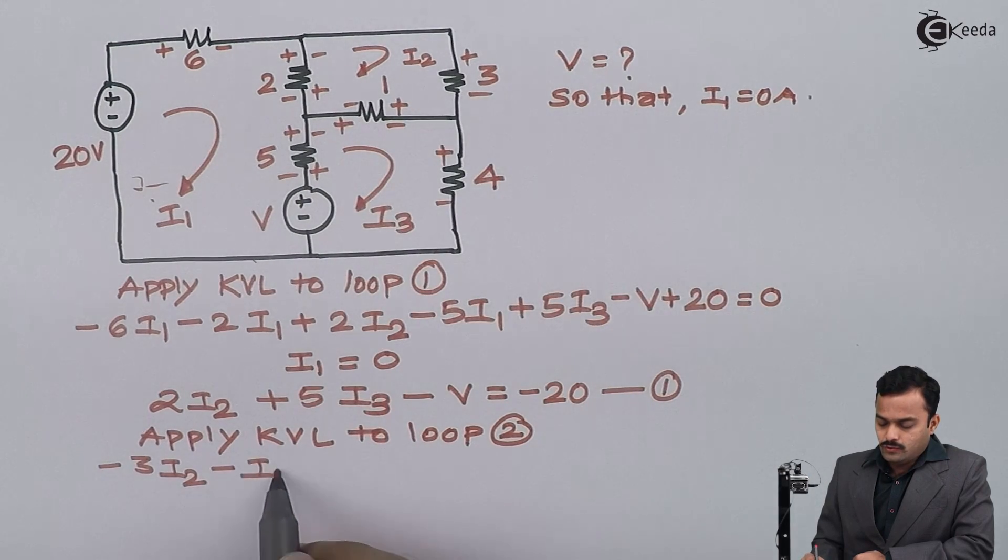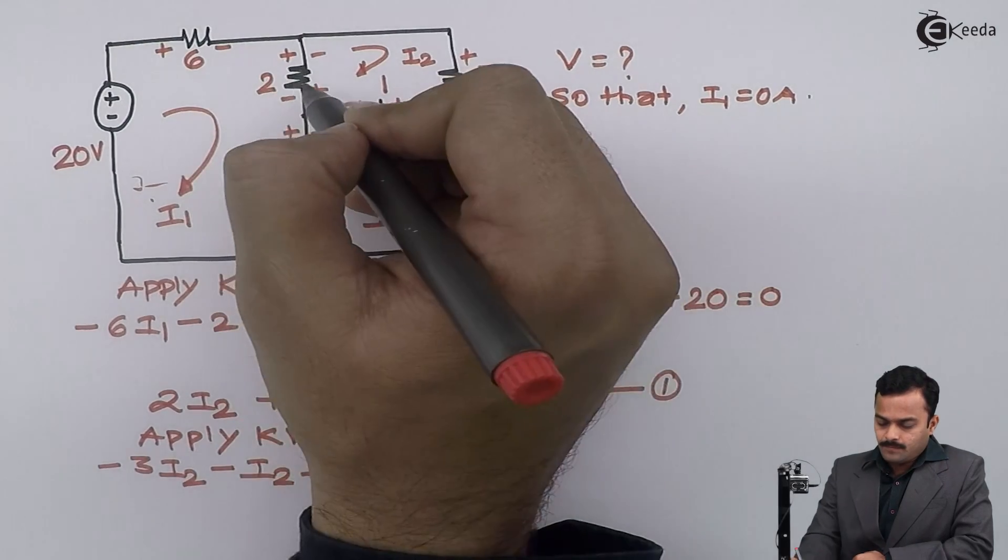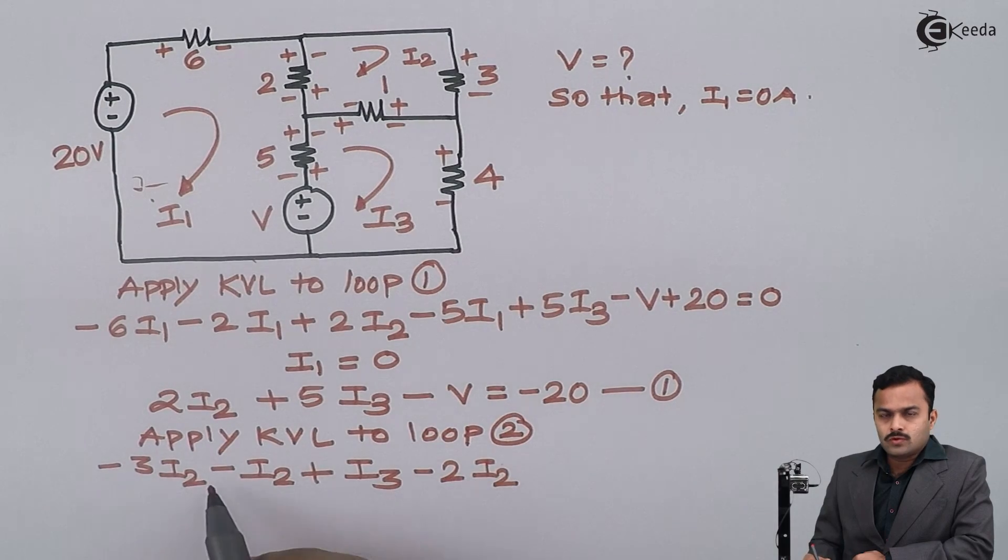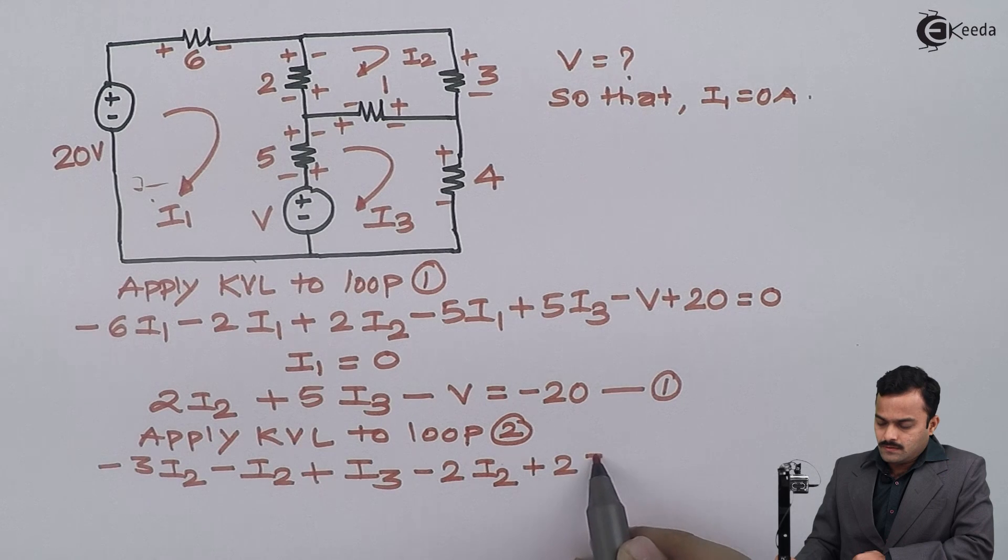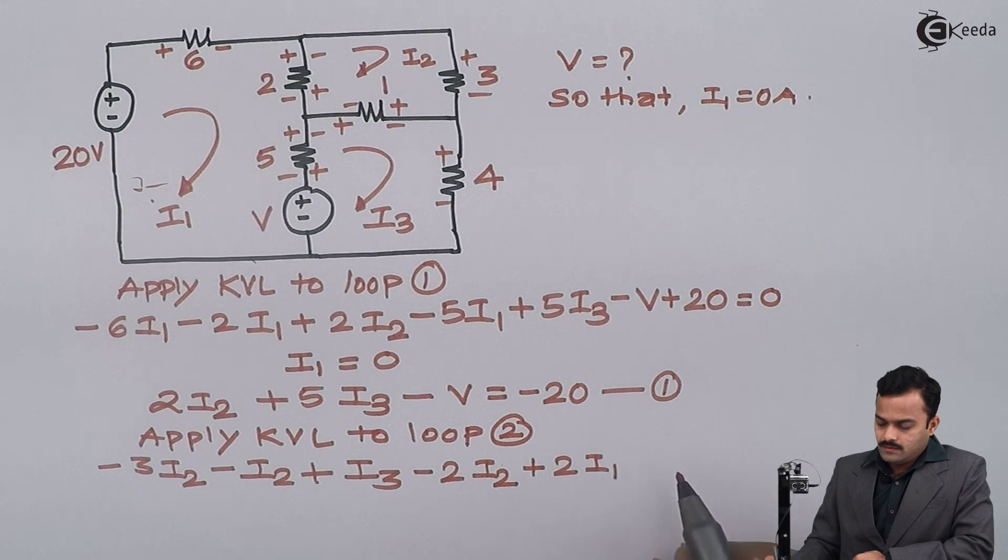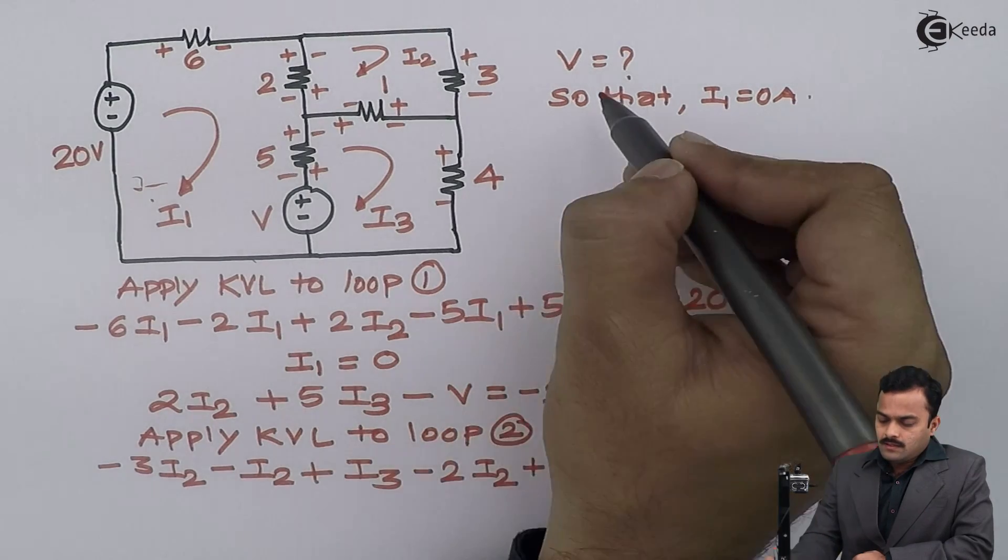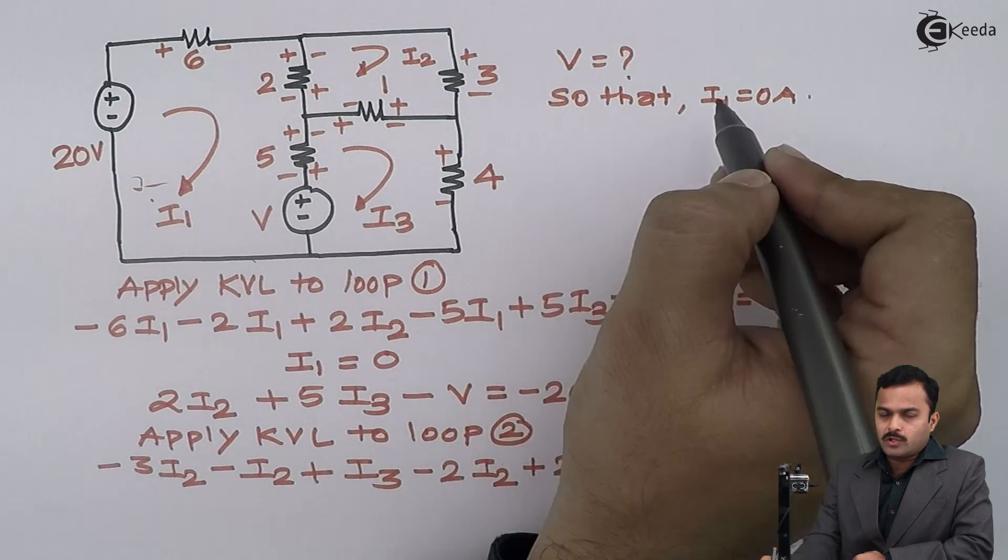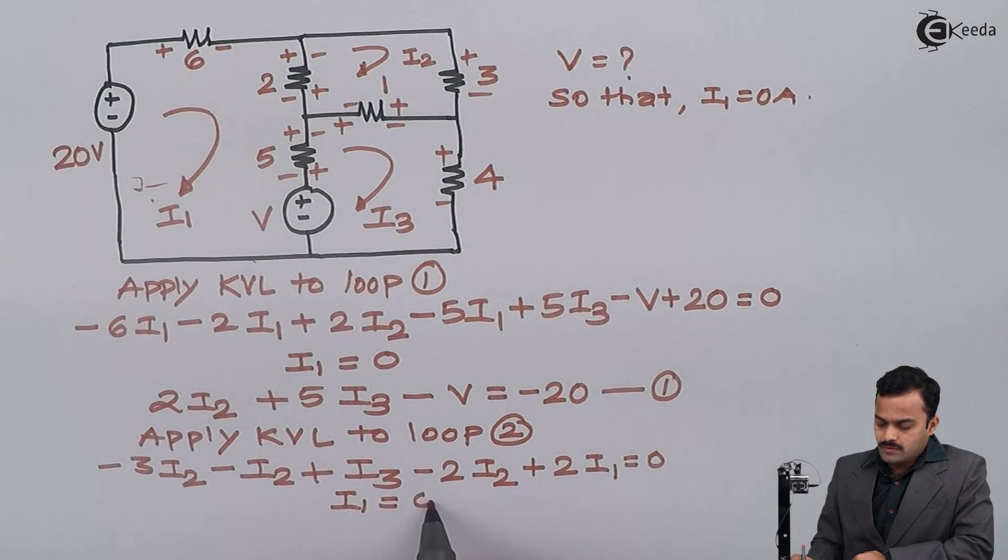Minus 2I2 plus I3, minus 2I2 plus 2I1 equals 0. Again, loop number 1 will have the current equal to 0 because that is given, so I will substitute I1 equal to 0.